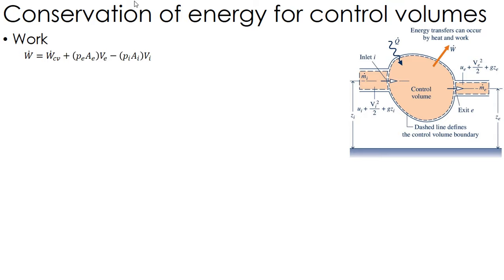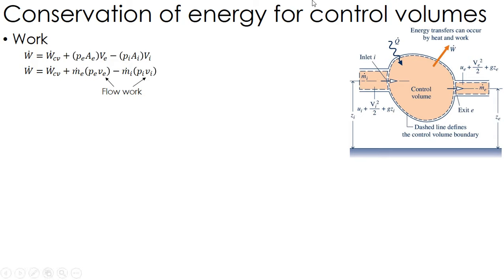That power is force times velocity, where force is pressure times the area of the inlet or exit. So pressure times area gives force, and force times velocity is power. The control volume is pushing flow out and getting work done on it by what's coming in — that's pressure times area times velocity. That area times velocity is the volumetric flow rate, which we can relate to mass flow.